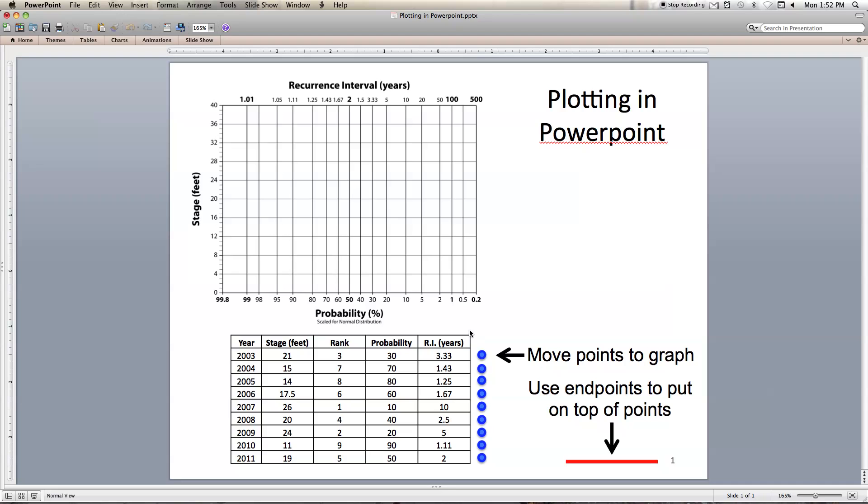So let's start with the first one. Grab it and it has a probability of 30% and a stage of 21%. So we're going to come up here and 21 is right about there. For 2004, 70% chance and a stage of 15, that puts it right about here.